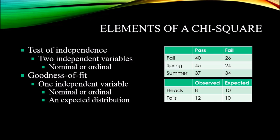For the goodness of fit, we have an expected distribution given to us as part of the design. For the test of independence, the expected values for each cell are calculated and the actual observations are compared to those expected values. The equation for calculating expected values is the row total multiplied by the column total, divided by the total sample size. In this example, the row total would be 40 plus 26, the column total would be 40 plus 45 plus 37, and those two totals are multiplied together and divided by the sum of all six cell values.